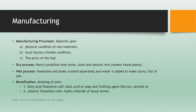Manufacturing processes depend on the physical condition of raw materials, the local factory climate condition, and the price of fuel. There are two processes used for manufacturing cement. The dry process is used when raw materials are hard crystalline limestone, slate, and natural rock cement. The wet process is used when raw materials like limestone shells are crushed separately and water is added to make slurry. This requires high fuel and energy, so it is not commonly in use.